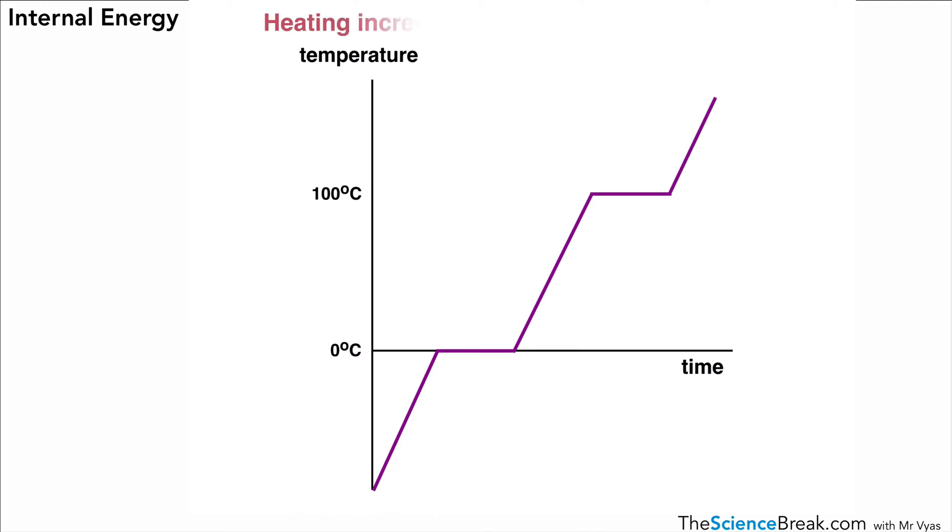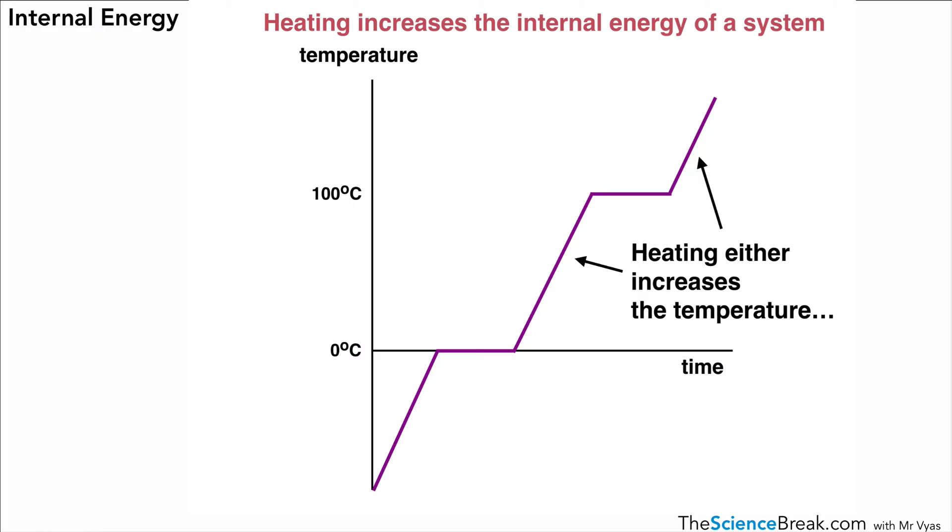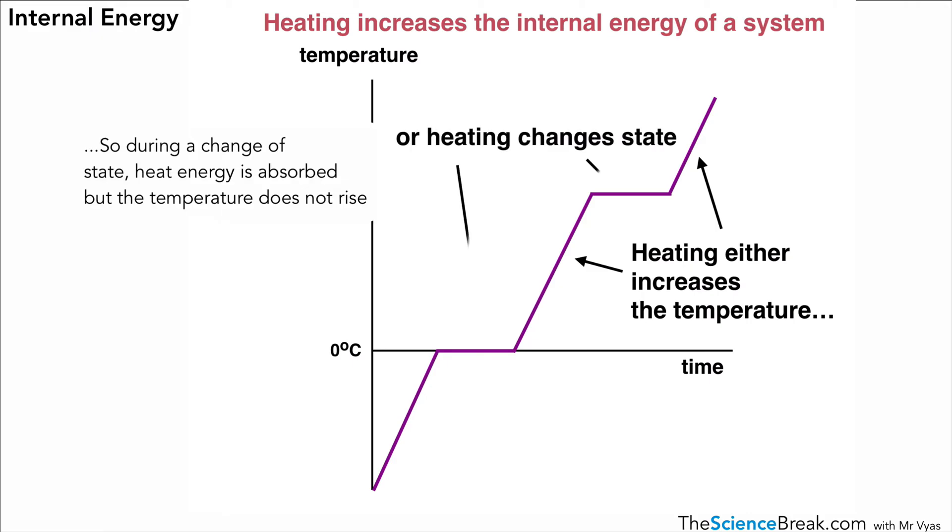What's happening in terms of the internal energy? We can do a simplified version of that graph there. We can see that heating the system will increase the internal energy. When we have the parts of the graph that are rising, heating will increase the temperature. At the flat parts, it will cause a change in state. So heating will either increase the temperature or cause a change in state of that system. This graph is probably a useful summary to describe the effect of heating on a system.